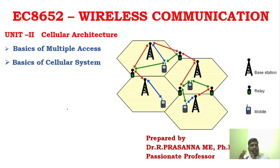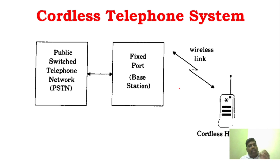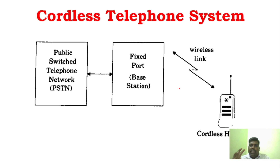In this unit, you have to know some basic concepts in Multiple Access and Cellular System. We are going to see the basics of Cellular System. If we know the mobile phones, we can see the cordless system of Cellular Architecture. It is a basic telephone system - a cordless telephone system. That is, first generation mobile phone.